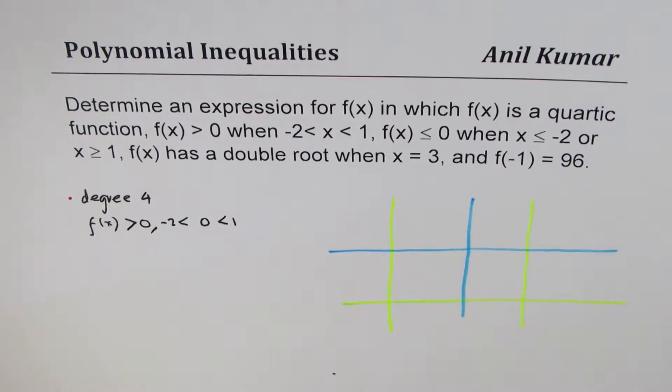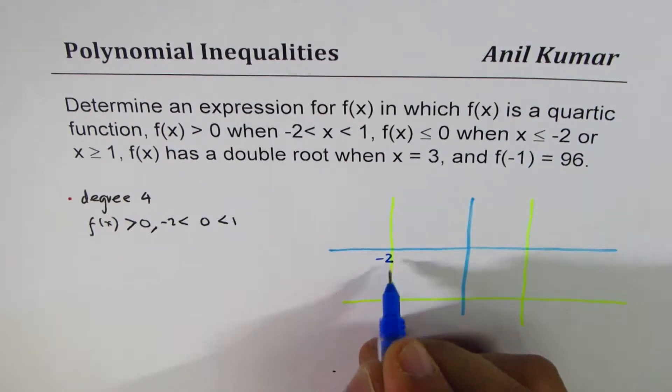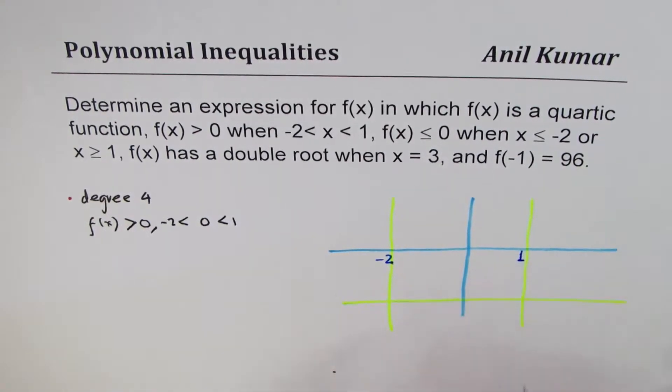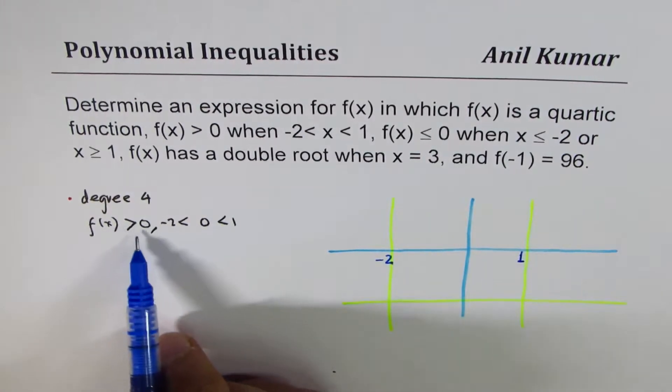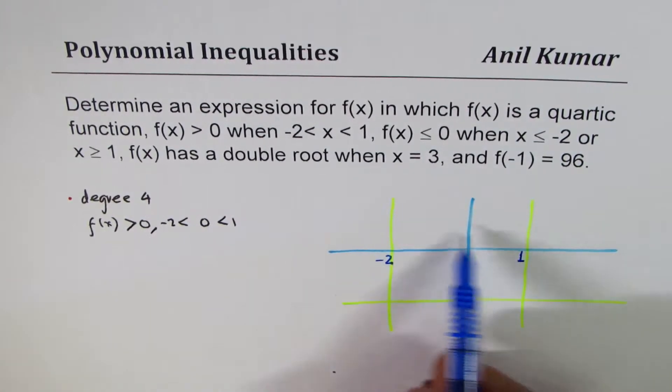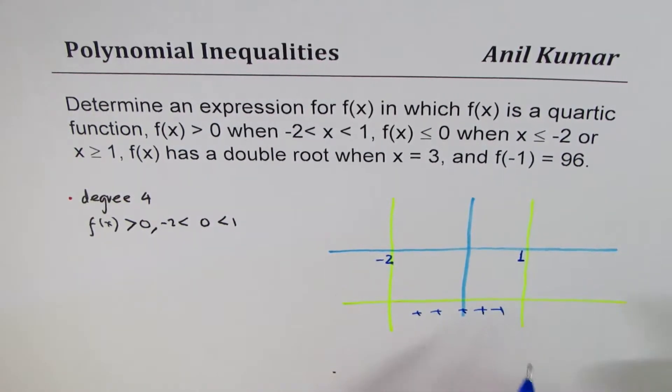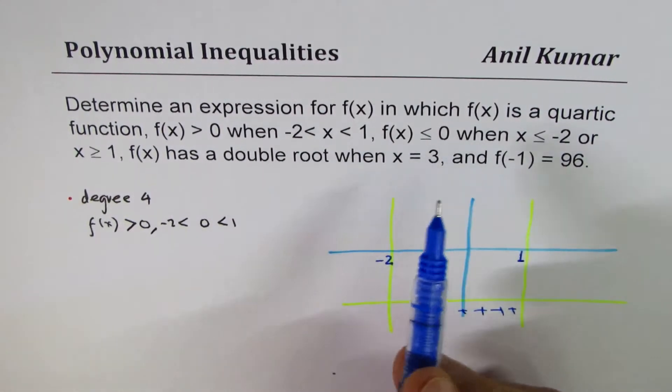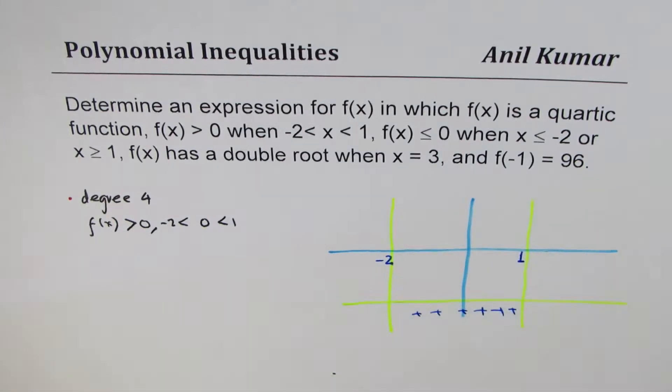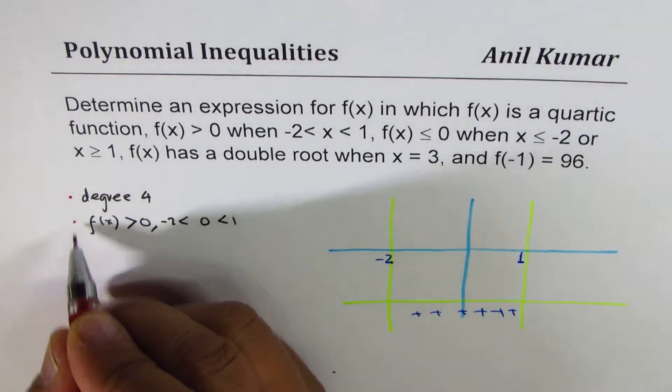These are not vertical asymptotes. These are all guidelines to help us understand. So, when we say it is positive between this interval, we are saying it is positive here. It is positive here. That is what it means. Correct? Now, what else is given to us?